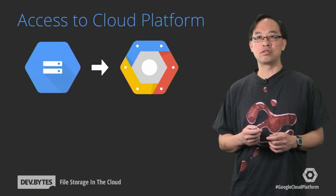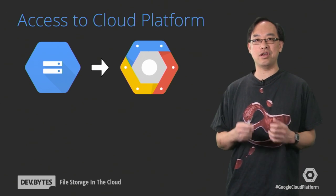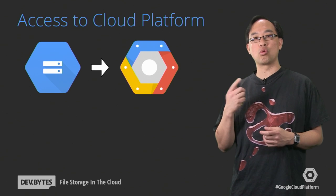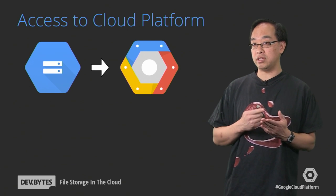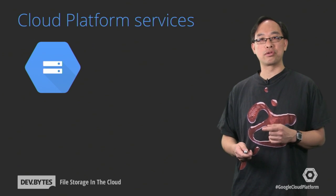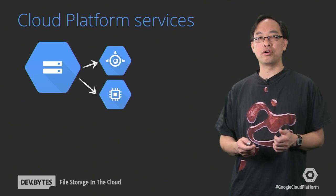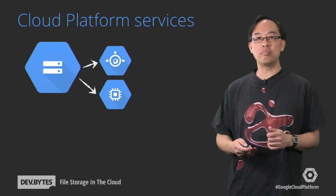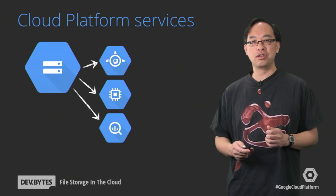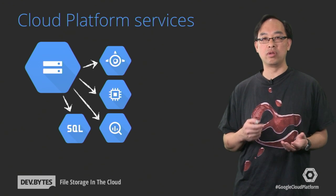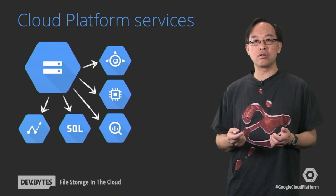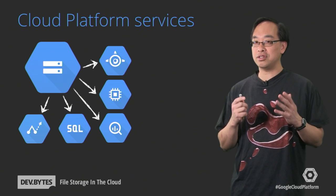One of the benefits of Cloud Storage is that your data gets access to other services in the Google Cloud Platform. Cloud Storage data can be ingested into tools which let you query, normalize, transform or ETL, perform analysis on, or otherwise process all of your data. These tools include Google App Engine apps, your code running on Google Compute Engine virtual machines, Google BigQuery — which gives you the ability to analyze multiple terabytes of data in mere seconds — Google Cloud SQL, our fully managed, highly available relational database in Google's cloud, and Google Prediction, our cloud-based machine learning service. As you can see, Google Cloud Storage isn't just for storage — it's also an entry point.